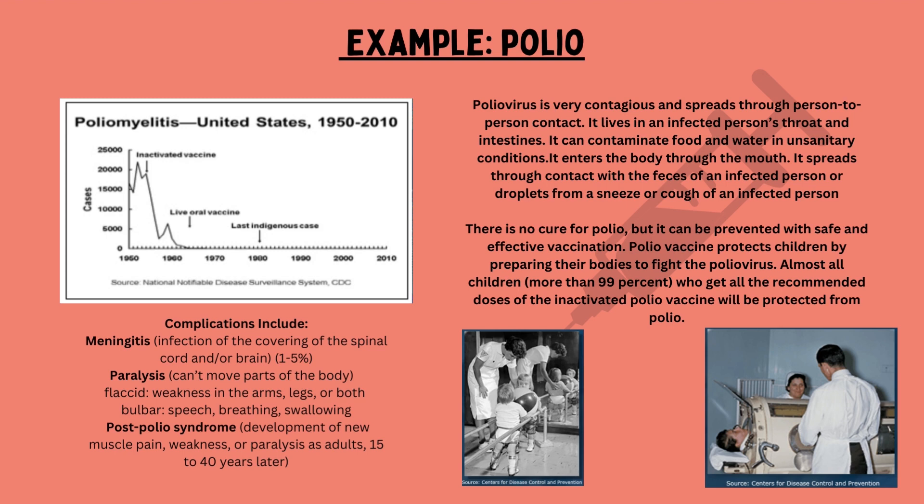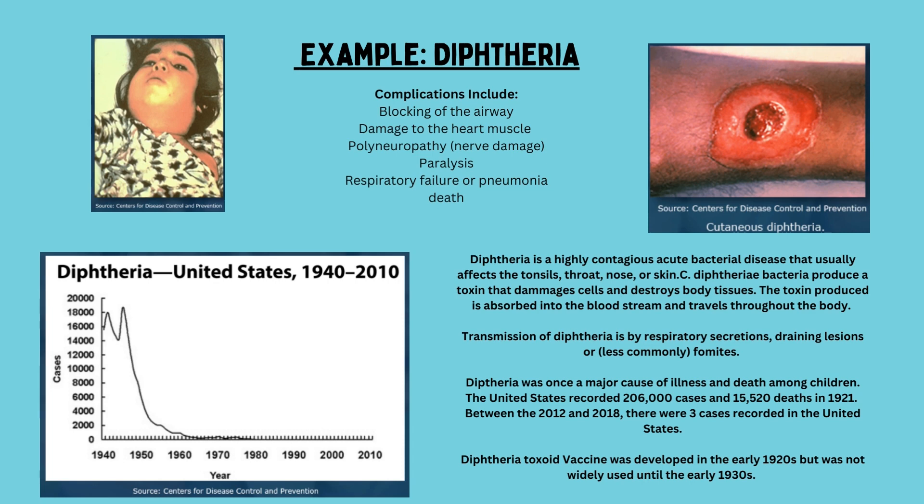The third example is diphtheria. Complications include blocking of the airway, damage to the heart muscles, polyneuropathy, paralysis, respiratory failure or pneumonia, and death. The CDC chart shows dropping rates after the vaccine was introduced. Diphtheria is a highly contagious acute bacterial disease that usually affects the tonsils, throat, nose, or skin. The bacteria produce a toxin that damages cells and destroys body tissues, which is then absorbed into the bloodstream and travels throughout the body.